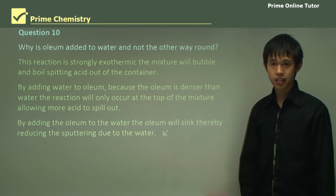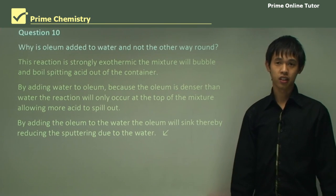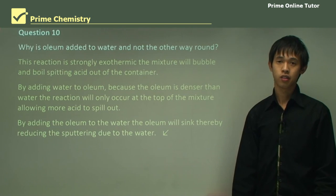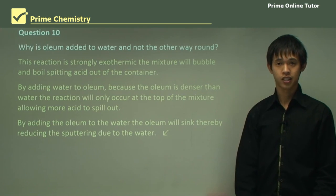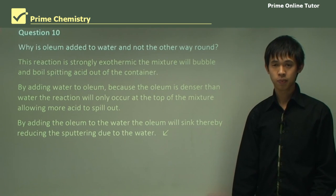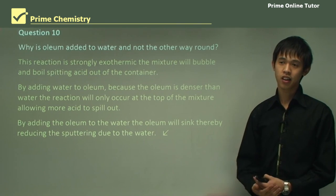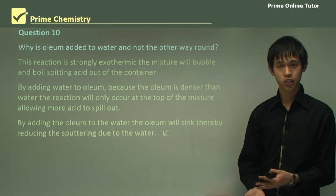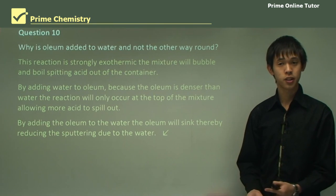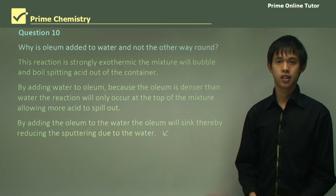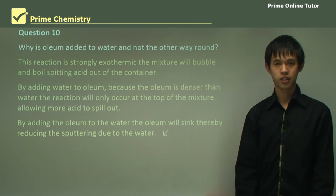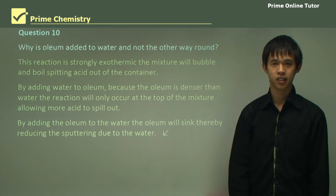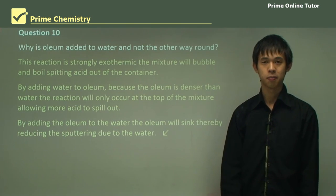That concludes today's lesson on the conditions required for sulfuric acid production. We've looked at how we optimize SO3 production and SO2 production. I hope you've learned something from this lesson, and I look forward to seeing you in the next one.